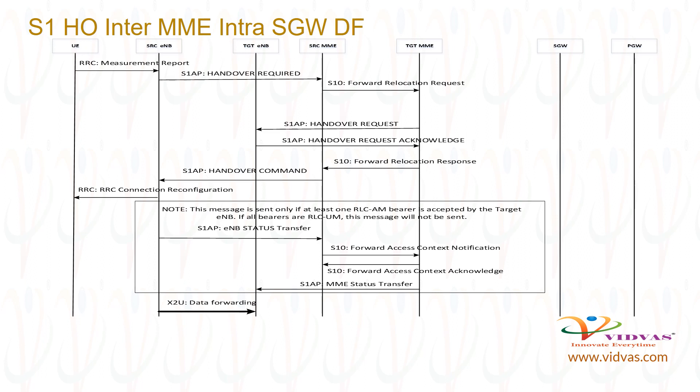Source ENB sends S1AP handover required message to MME. As target ENB is managed by a different MME, source MME sends S10 forward relocation request to target MME.